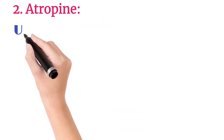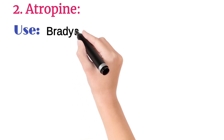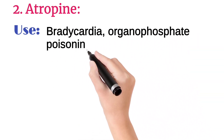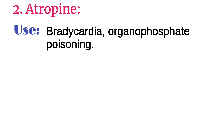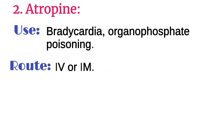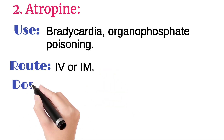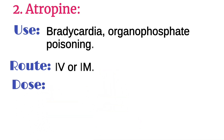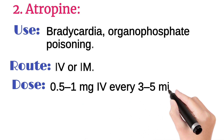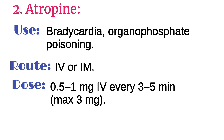The second one is atropine. It is used in bradycardia and organophosphate poisoning. It is injected intravenously or intramuscularly. Its usual dose is 0.5 mg up to 1 mg intravenously every 3 to 5 minutes, maximum 3 mg.